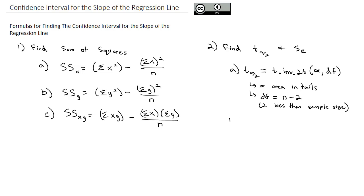The other thing we need to find for our confidence interval is the standard error. The standard error is the square root of the sum of squares in the y direction minus the slope estimate from the sample times the standard error in the xy direction, all divided by n minus two.